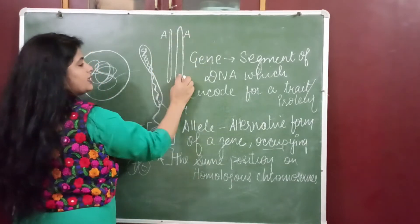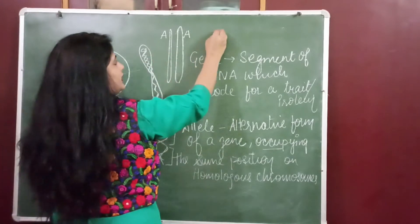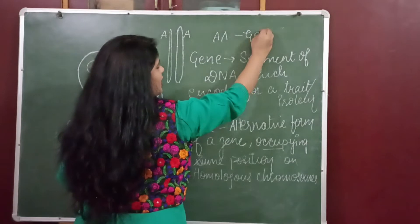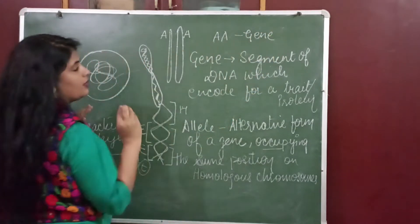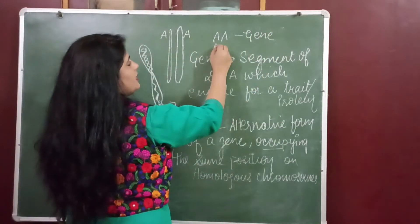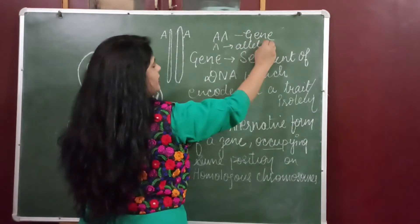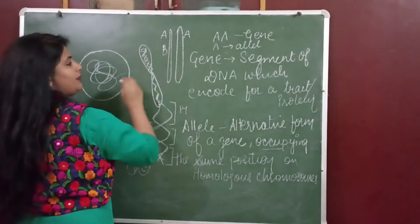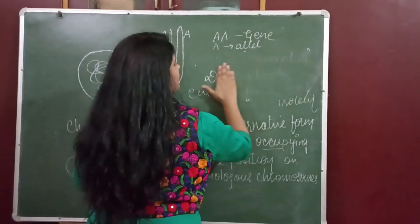So capital A capital A is a gene for height here, and A is an allele - a single A is an allele. Now here I have capital B for brown color and small b for black color for hair.